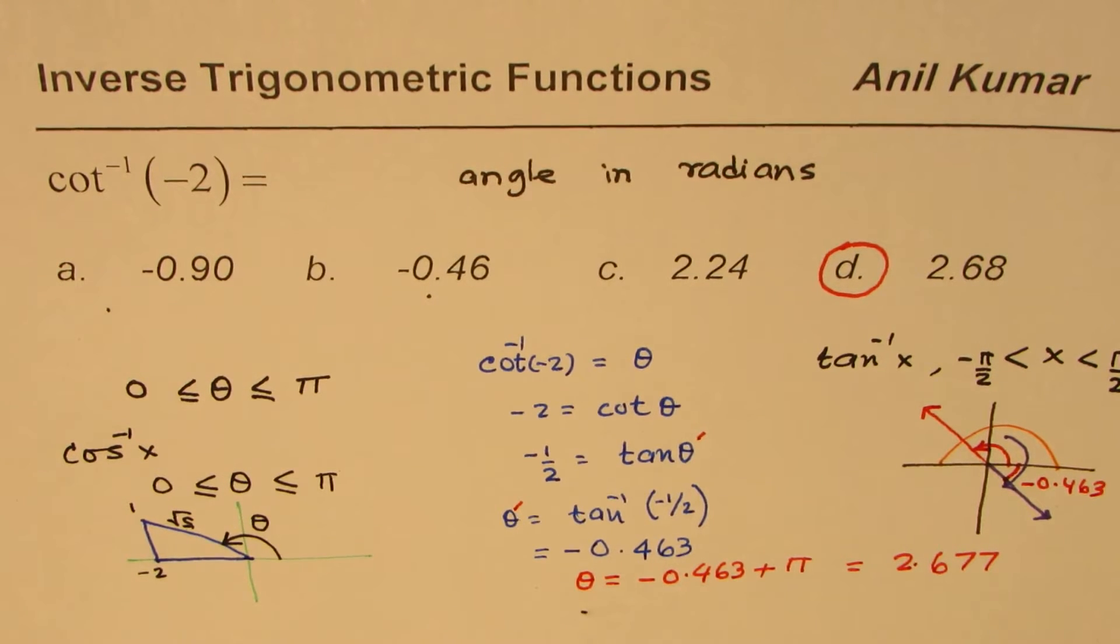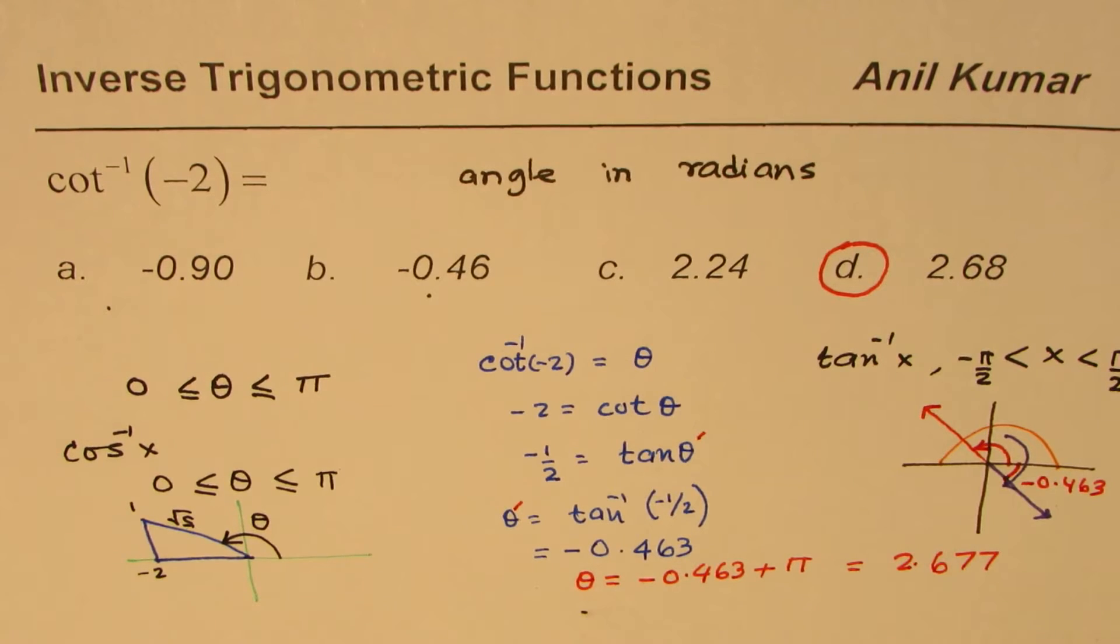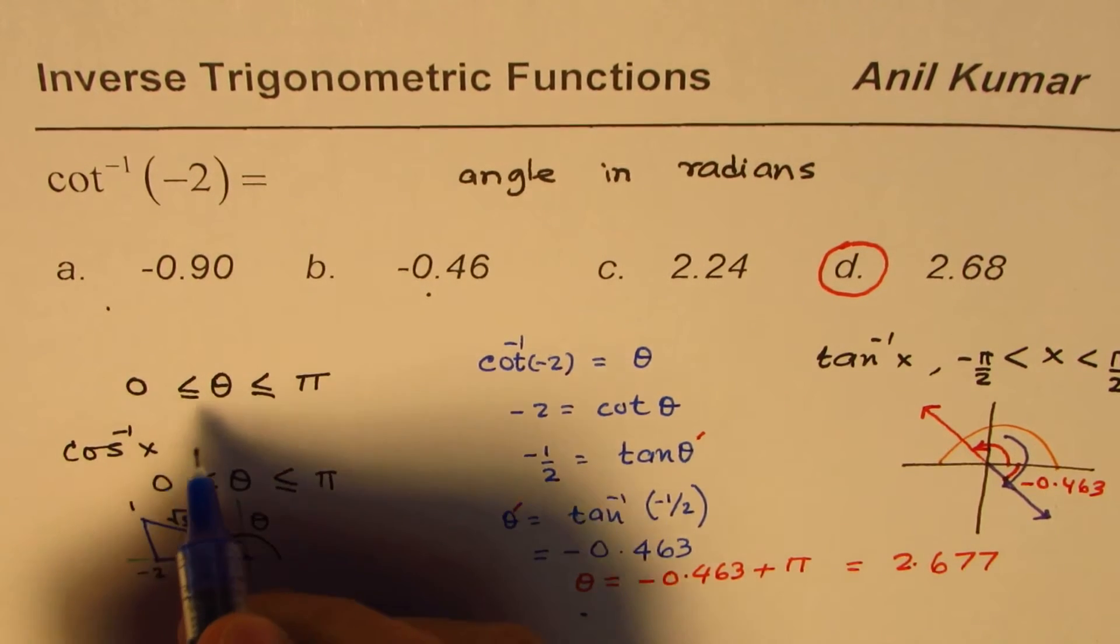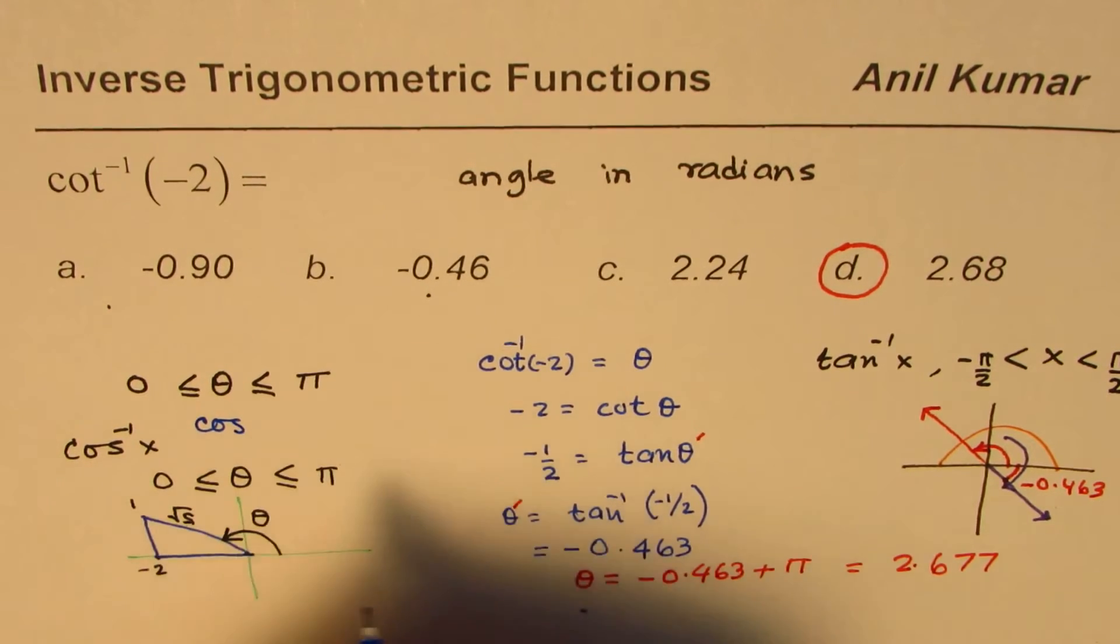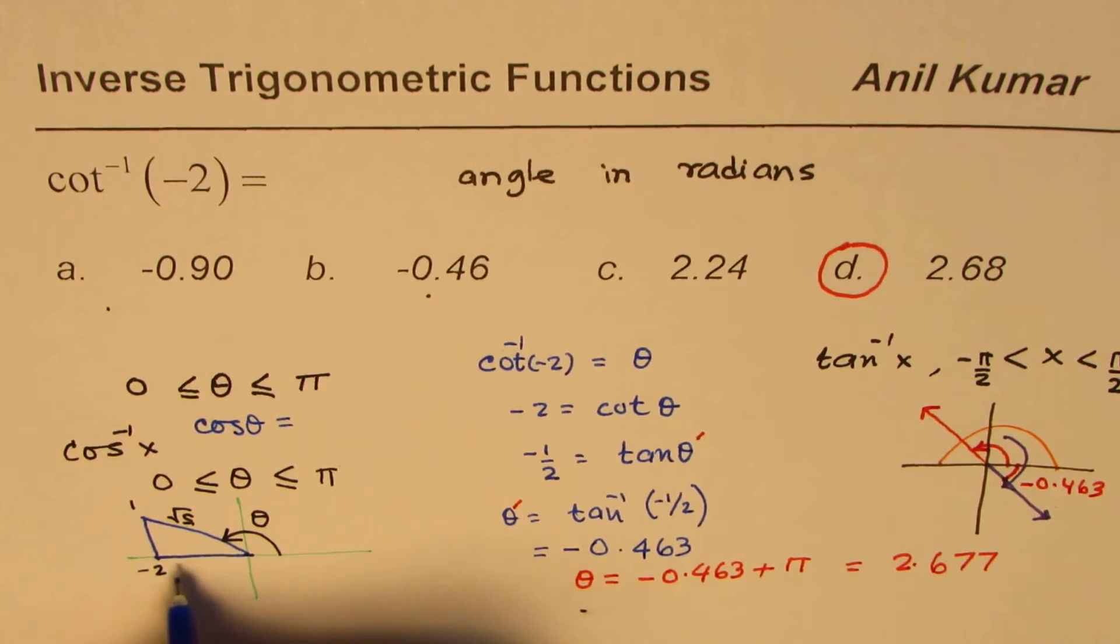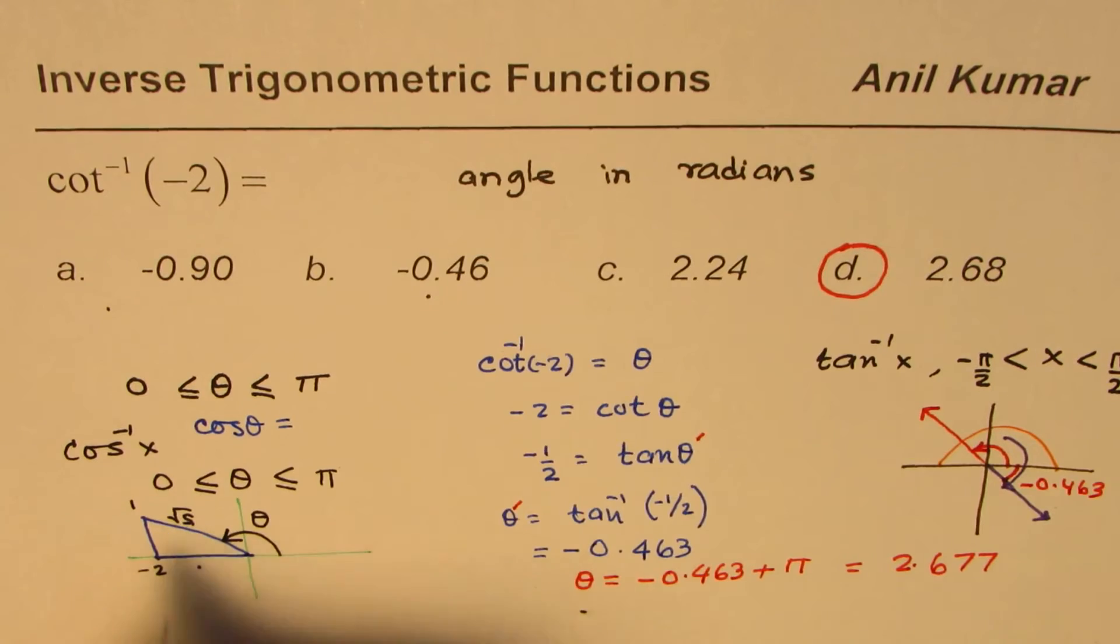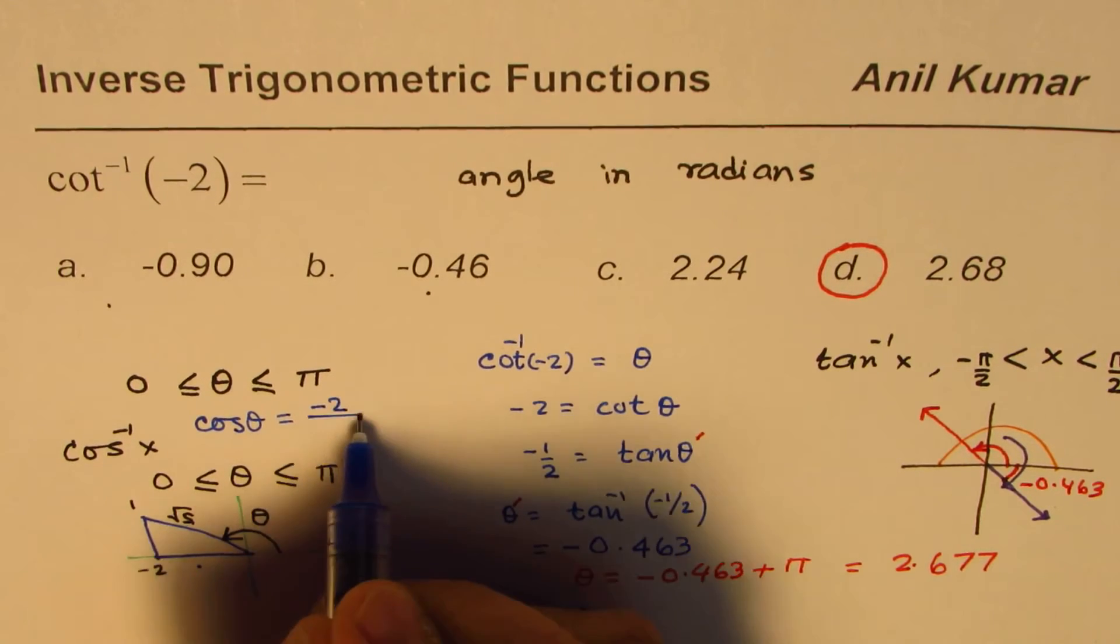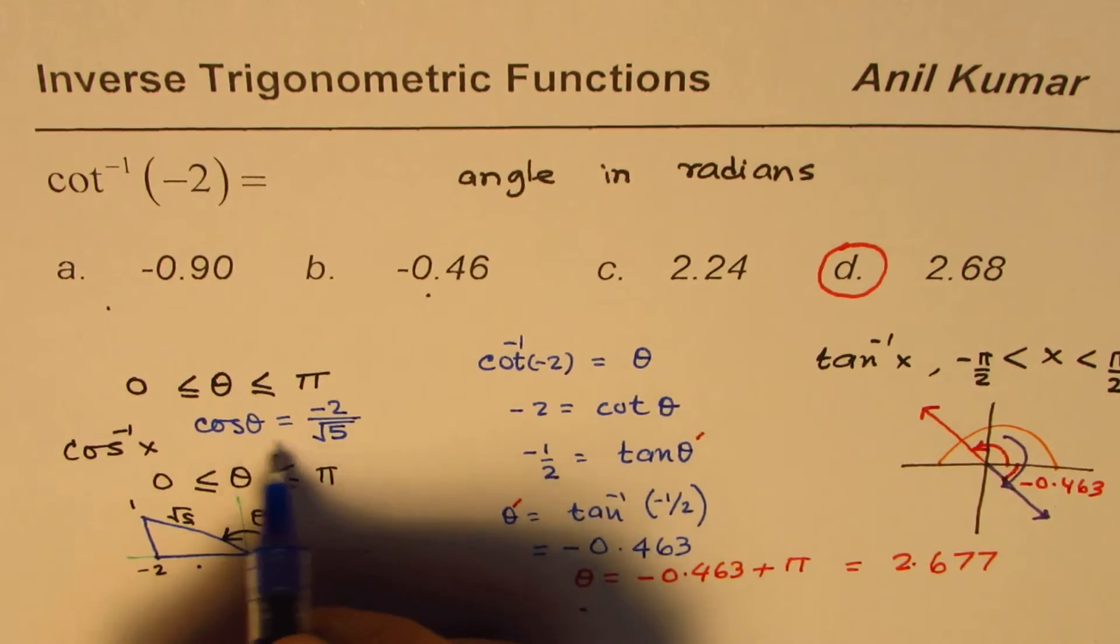So this happens to be square root 5. So from here you can actually write down that cos theta is equals to minus 2 over square root 5.